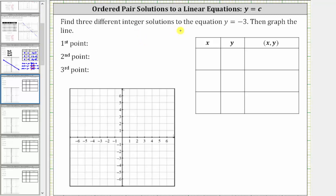We're asked to find three integer solutions to the equation y equals negative three and then graph the line. Each solution is an ordered pair in the form of x comma y that satisfies the equation y equals negative three.